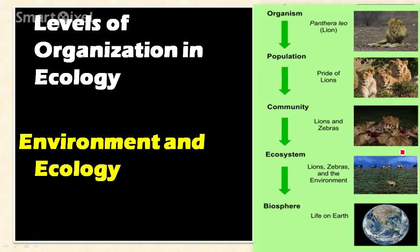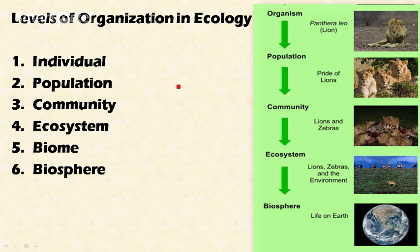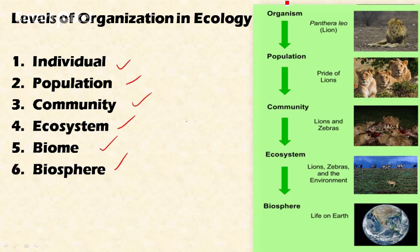Welcome friends. In this video let's discuss the levels of organization in ecology. In our last video we learned that ecology is the scientific study of the reciprocal relationship between organisms and the environment. For convenience, ecology is divided into different levels of organization. There are six levels: organism, population, community, ecosystem, biome, and biosphere.